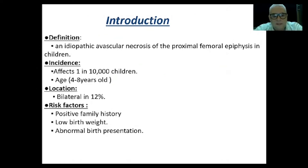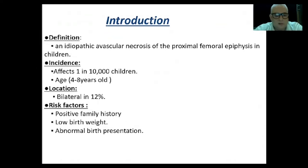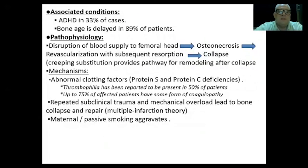We also found that some patients' mothers suffered from repeated abortions, or their relatives had strokes and heart attacks. By investigating their genetic hypercoagulant status, we found the need to give them anticoagulation. There has also been reported a higher occurrence in low birth weight children and in abnormal birth presentations.